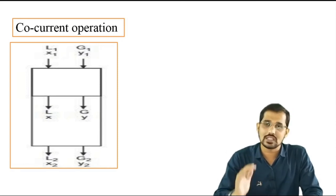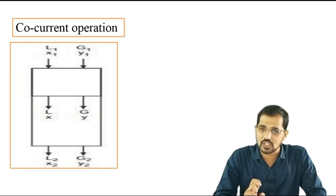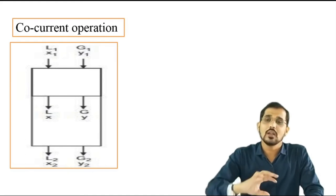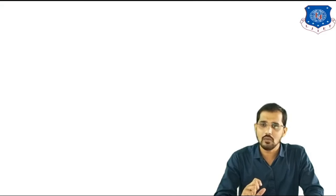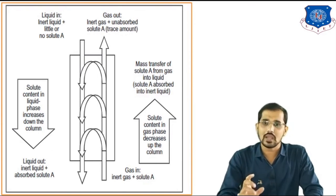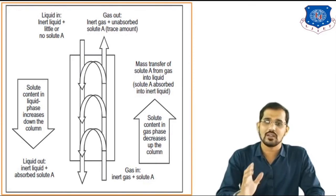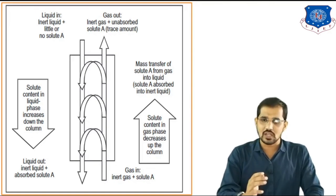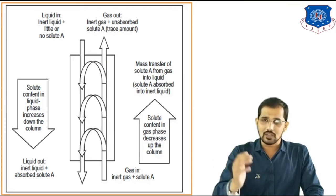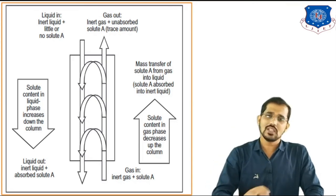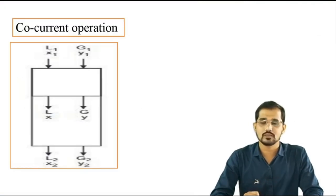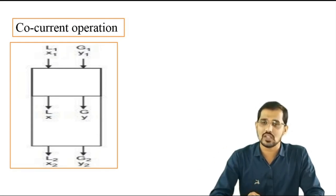In this lecture, I have discussed different methods of operation for gas absorption — co-current and countercurrent operation — and the detailed phenomena of gas absorption. This figure can be asked for 5 to 7 marks in your final examination, so study it in detail. Component A concentration decreases in the gaseous stream from bottom to top and increases in the liquid stream from top to bottom. We will see the next topic in the next lecture. Thank you very much.